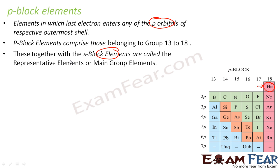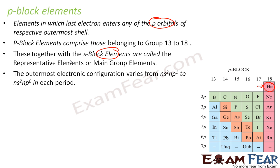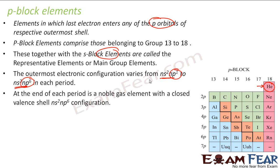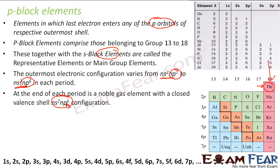When you combine s-block and p-block elements, they form the main group of elements, as these are the elements we deal with most. The outer electronic configuration for p-block elements ranges from ns2 np1 to ns2 np6. The 18th group is the noble gas elements where the p-orbitals are completely filled.